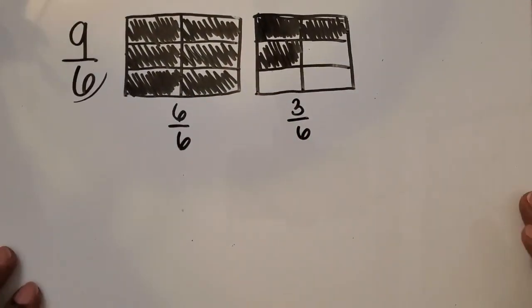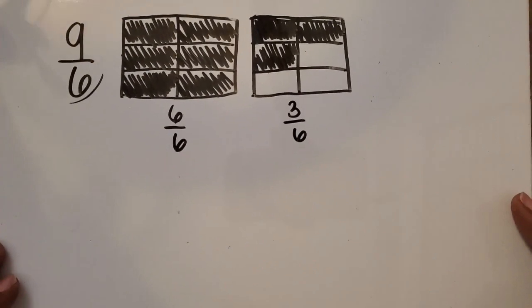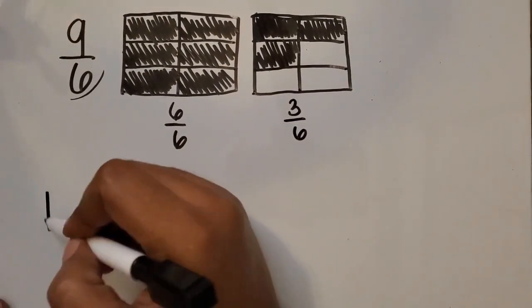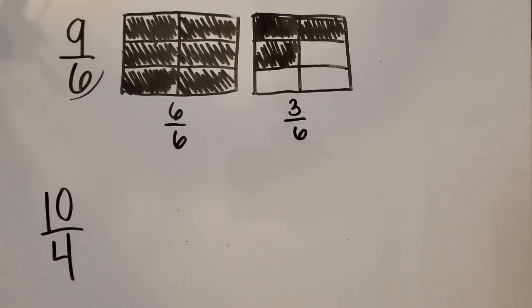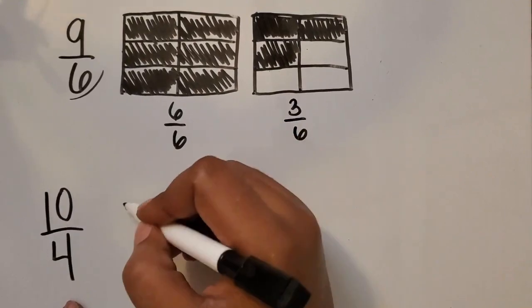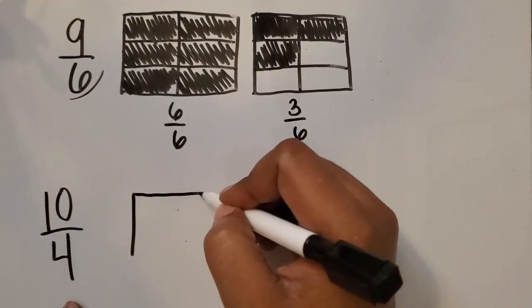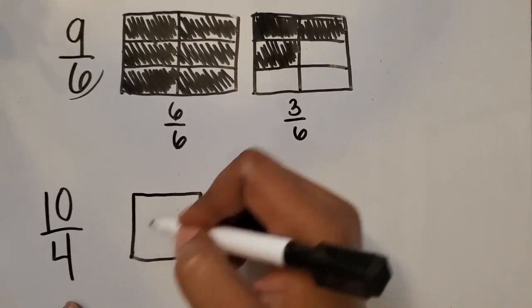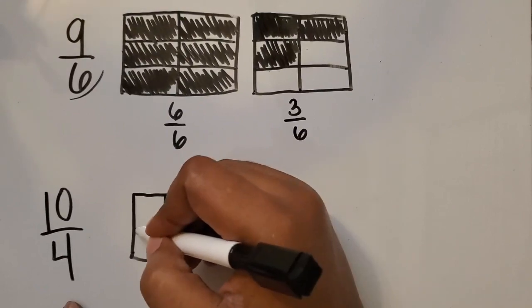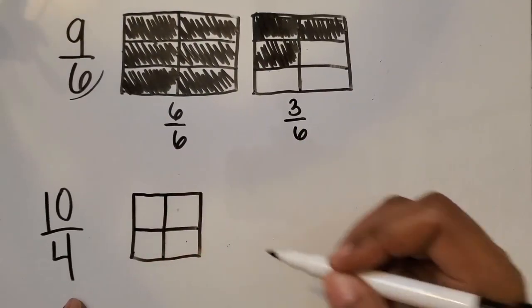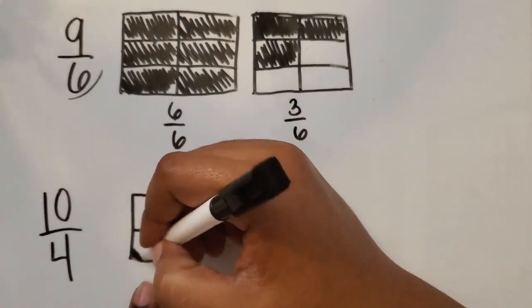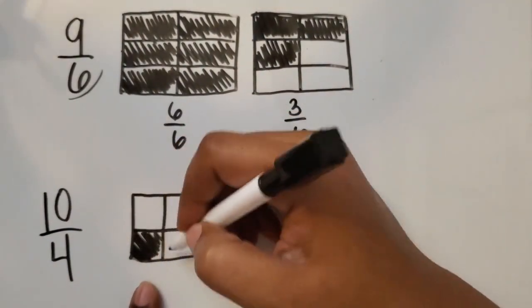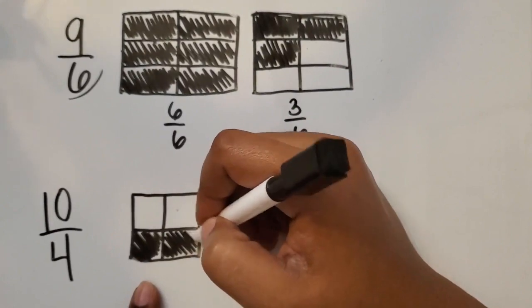Let's do one more example. 10/4. So again, our denominator tells us how many total equal parts are in the whole. So we're going to draw a whole. I'm going to draw it like a window. And I'm going to shade in because I need 10 fourths. Let's see. How many can we get from this one whole that is partitioned into fourths?